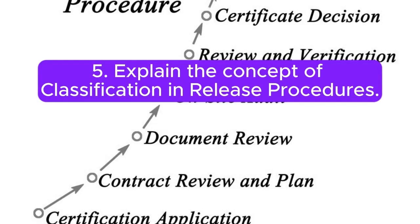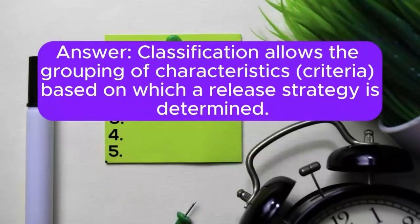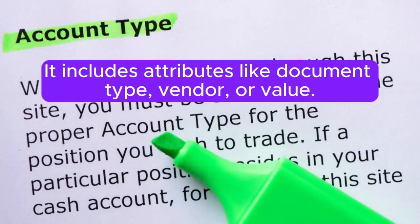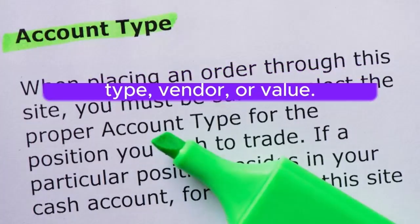Question 5: Explain the concept of classification in release procedures. Answer: Classification allows the grouping of characteristics and criteria based on which a release strategy is determined. It includes attributes like document type, vendor, or value.